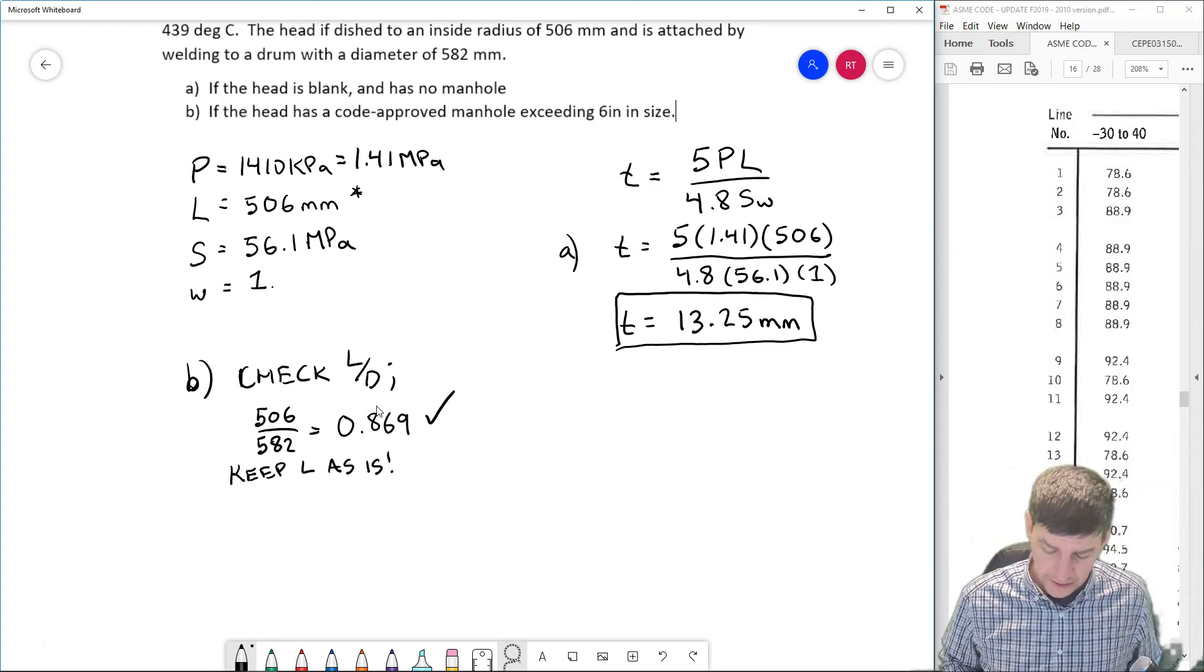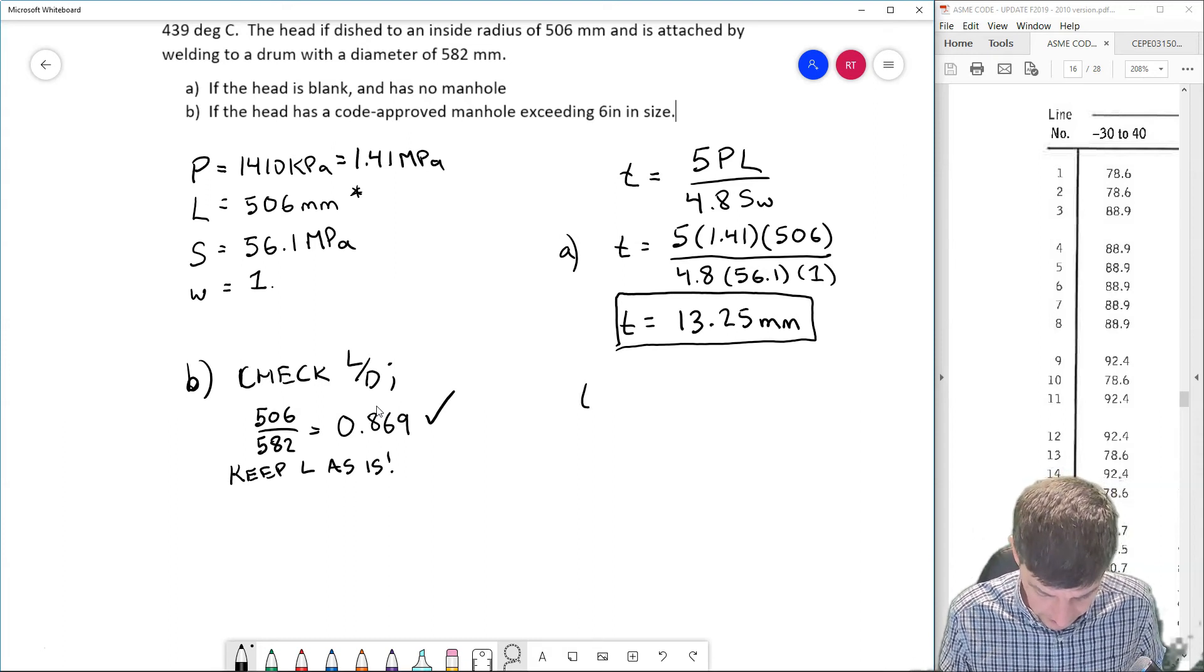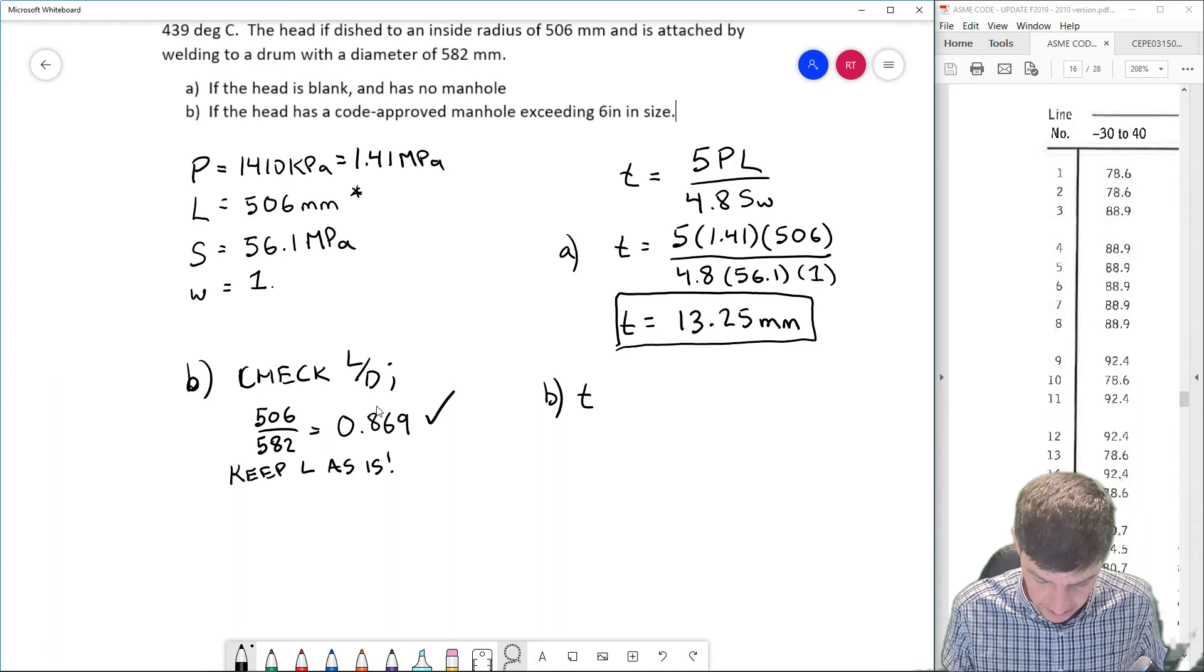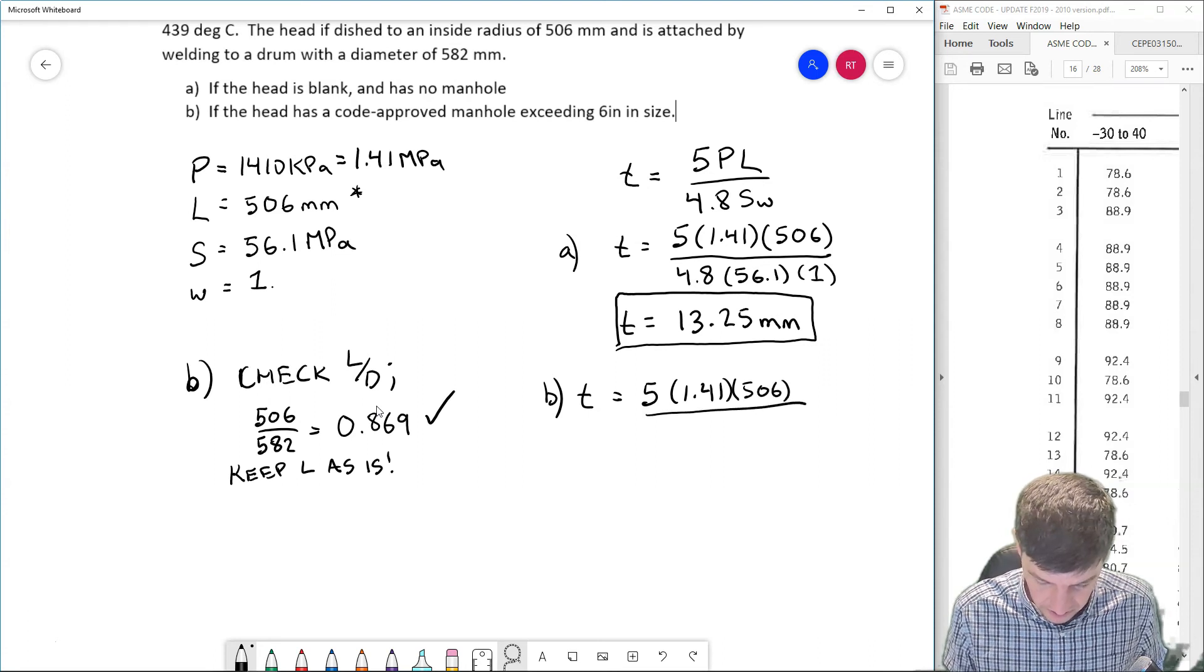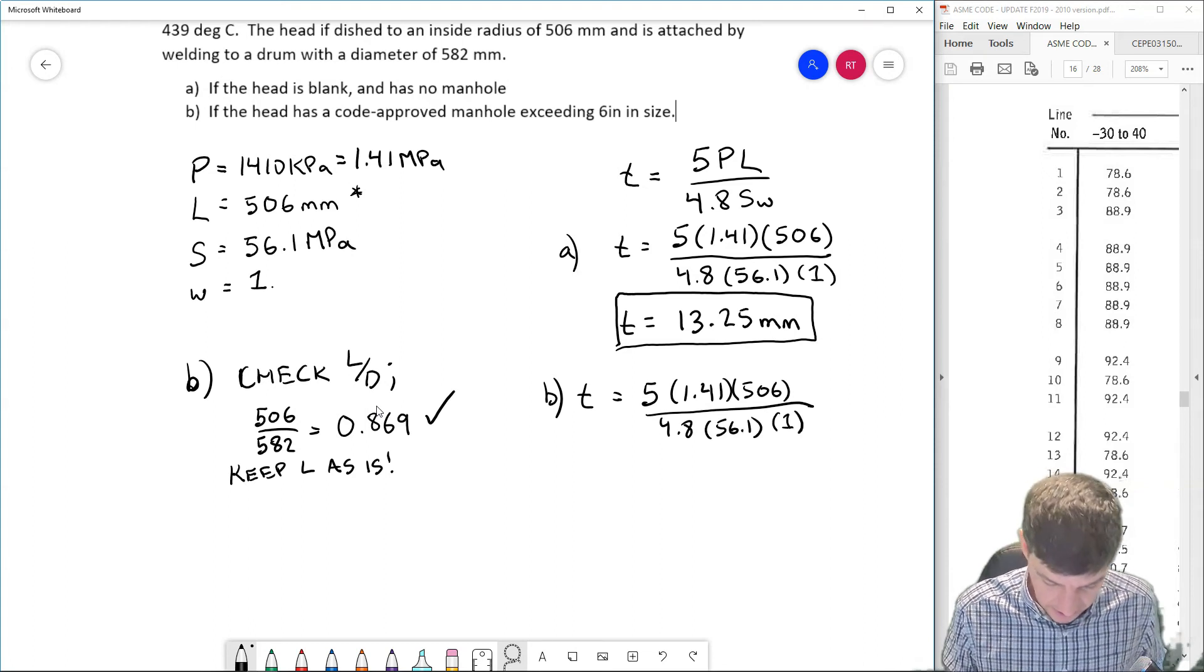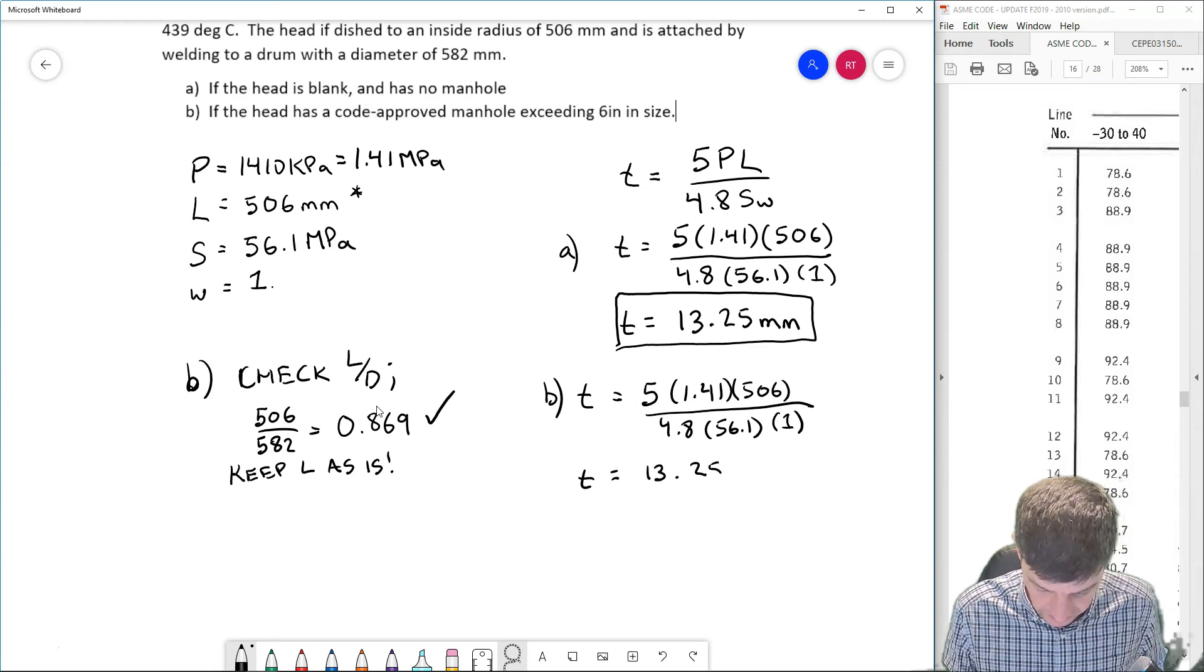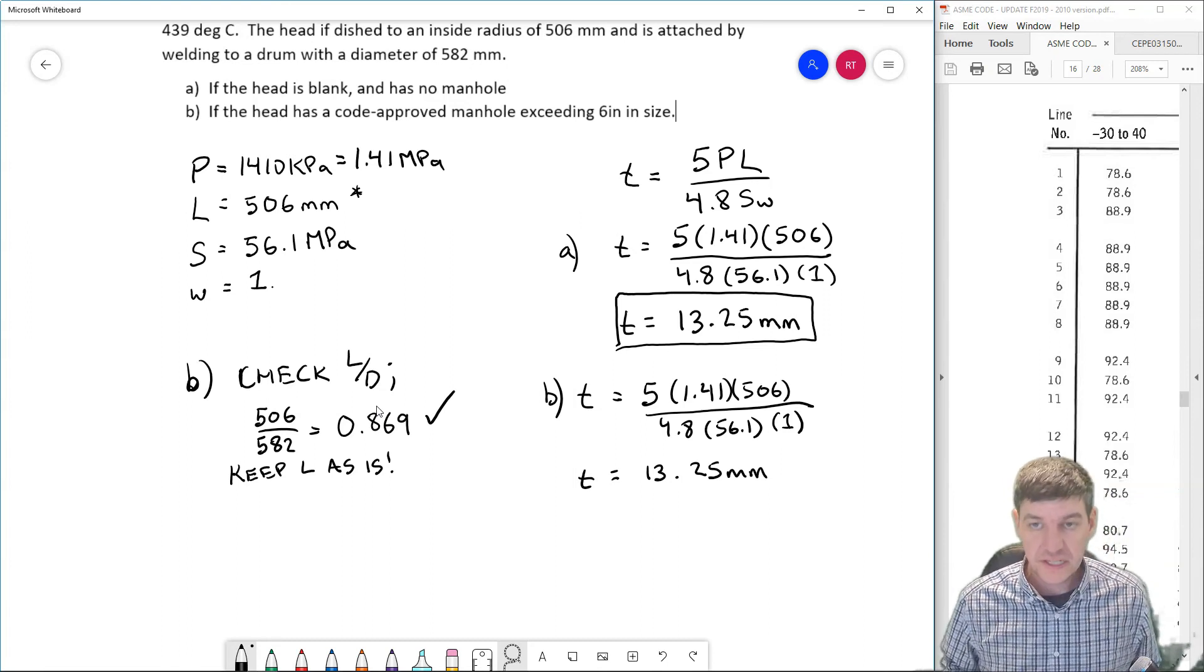Okay, so I can go and calculate my thickness. And so just like I did before, my thickness in part B is going to be equal to 5 times 1.41 times 506 divided by 4.8 divided by 56.1 and multiplied by 1. And just like we had before, I would get a thickness of 13.25 millimeters.